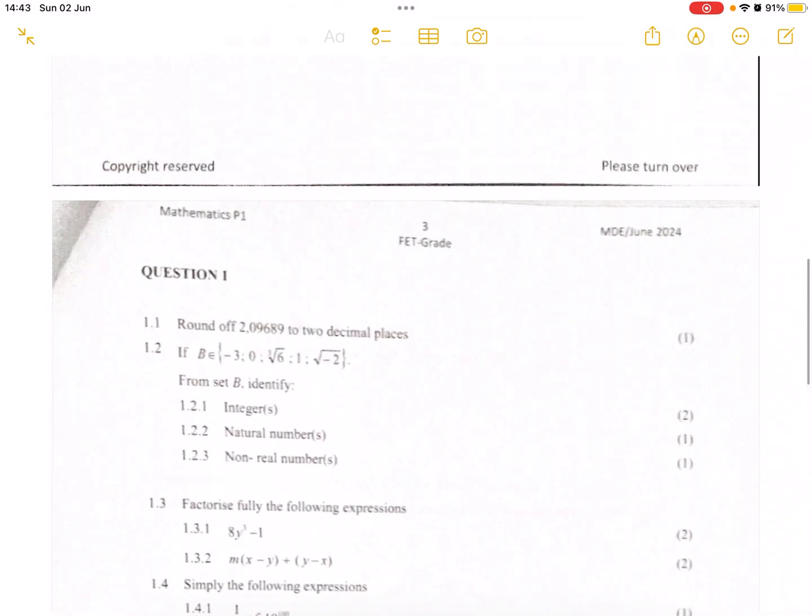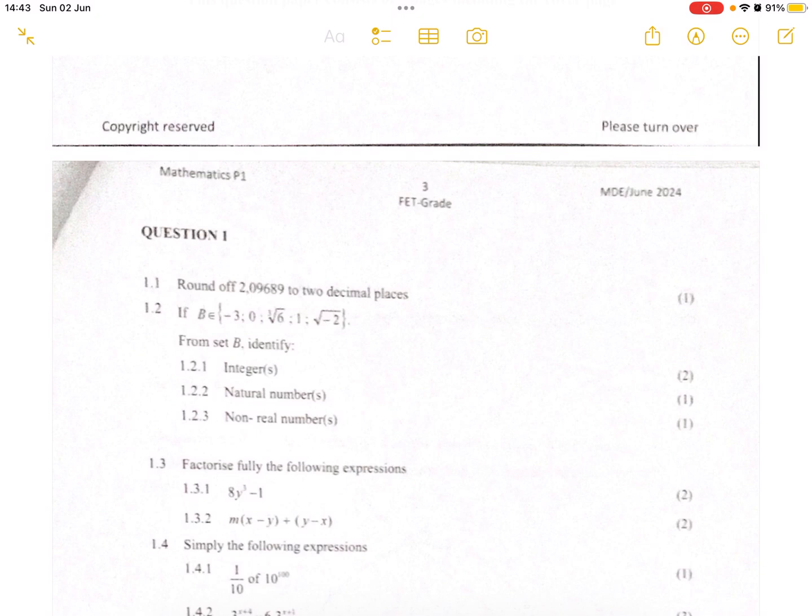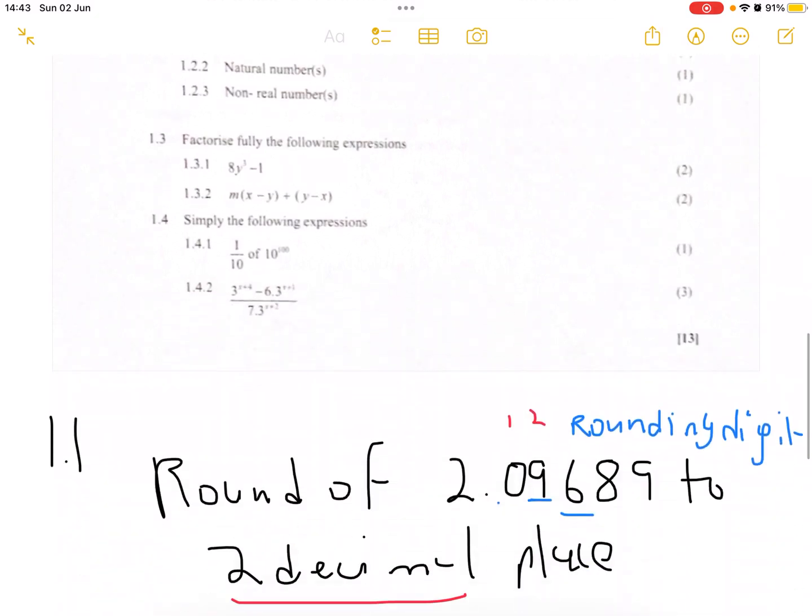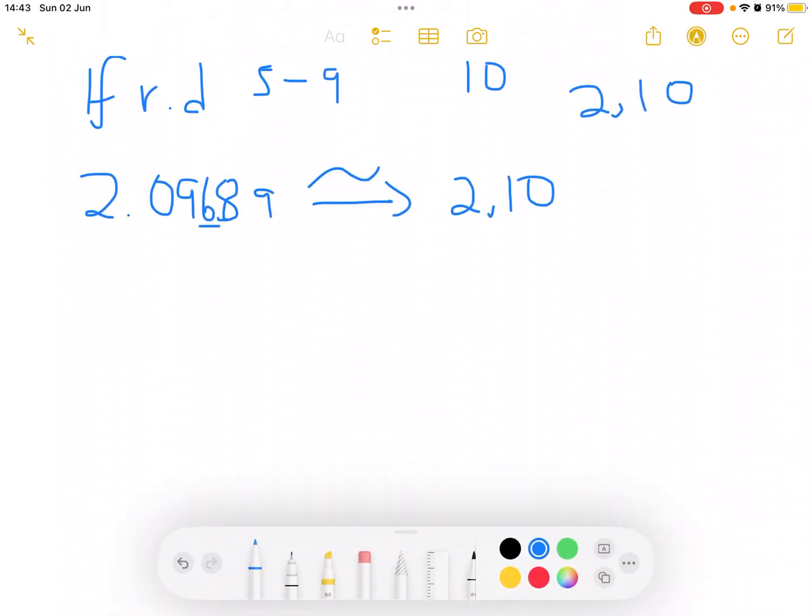Let's move on to the next question. Question 1.2 says, if you're given b is an element of negative 3, 0, the cube root of 6, 1, and the square root of negative 2. From the set of b, we have to identify 1.2.1, integers.